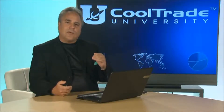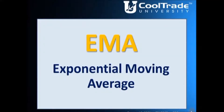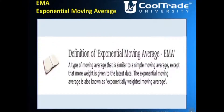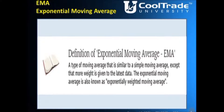Along with simple moving averages, we're going to go right into what's called Exponential Moving Averages, or EMA. One little difference — it's a type of moving average that is similar to a simple moving average, except there's more weight given to the latest data. The exponential moving average is also known as the exponentially weighted moving average. This type of average reacts faster to recent price changes than a simple moving average. The 12 and 26-day EMAs are the most popular short-term averages, and they're used to create indicators like the Moving Average Convergence Divergence, known as MACD, and the Percentage Price Oscillator, PPO.